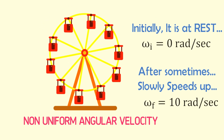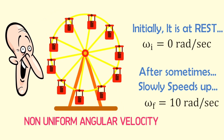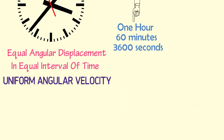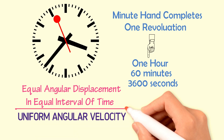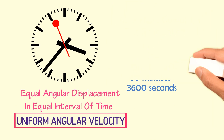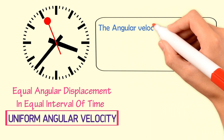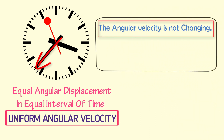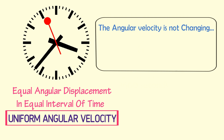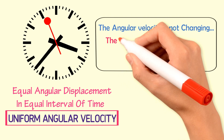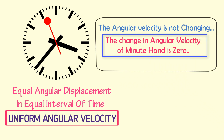If you understand these two cases, you can now easily understand the concept of angular acceleration. The minute hand of a clock rotates with constant or uniform angular velocity — its angular velocity is not changing with the passage of time, and the change in angular velocity of the minute hand is zero.